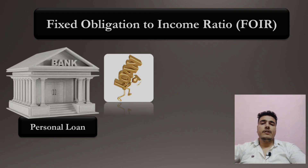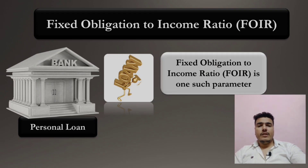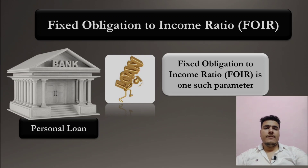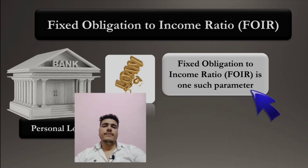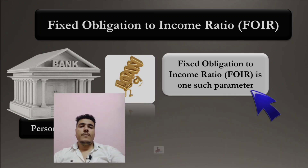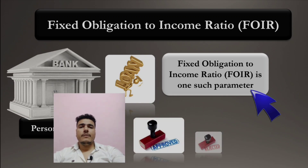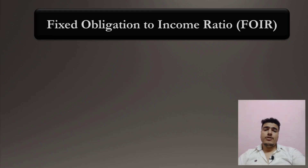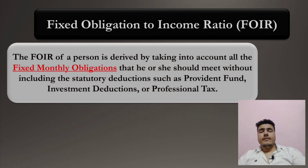Fixed Obligation to Income Ratio is one such parameter that the bank will check before disbursement of a loan. Whenever you apply for a personal loan, the bank will check this ratio, and on the basis of this ratio the bank can approve or reject your loan.